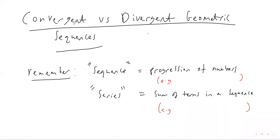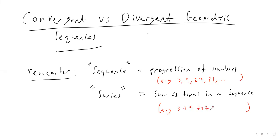Today we're going to look at the difference between a convergent and a divergent geometric sequence. A key thing to remember is that a sequence is a progression of numbers — for example, a geometric sequence could be 3, 9, 27, 81, and so on. A series, on the other hand, is a sum of the numbers in the sequence, so the series for this sequence would be 3 + 9 + 27 + 81.